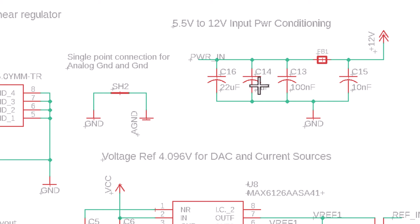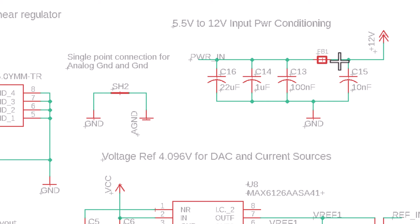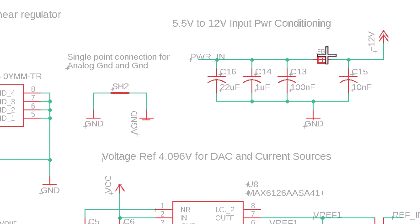A ferrite bead acts like an attenuator providing high impedance at high frequency. At DC it acts like a short, but resistance increases with frequency, blocking high frequency noise. It doesn't do well at low frequencies — say 100 Hz, 1 kHz, or even 10 kHz — there's very little resistance there. A good practice is to put a capacitor on either side of your ferrite bead to create a low pass filter network, which is why I have that 10 nanofarad cap after the ferrite bead.